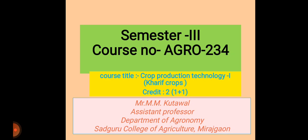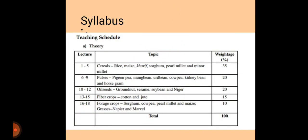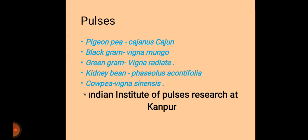In this course we discuss different oilseed crops and pulse crops. The most important pulse crops include pigeon pea (tur), mung bean, urad bean, cowpea, kidney bean, and horse gram. Botanically: pigeon pea is Cajanus cajan, black gram is Vigna mungo, green gram is Vigna radiata, kidney bean is Phaseolus acutifolius or matki, and cowpea is Vigna sinensis.